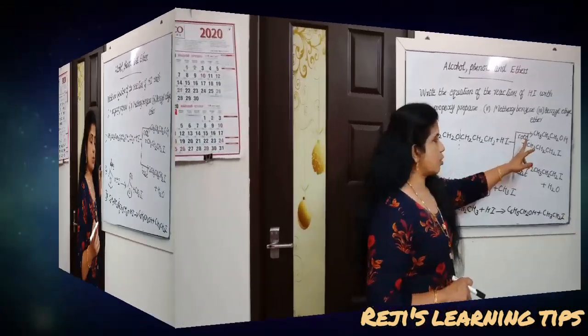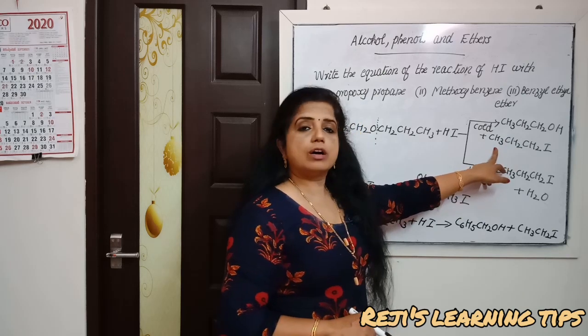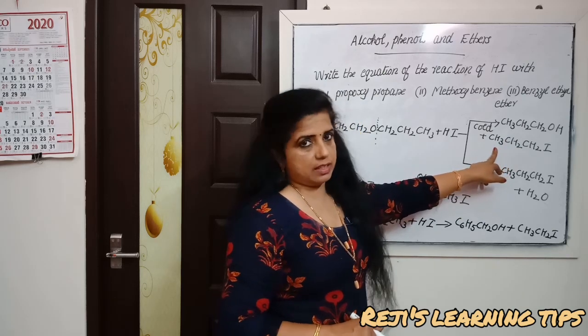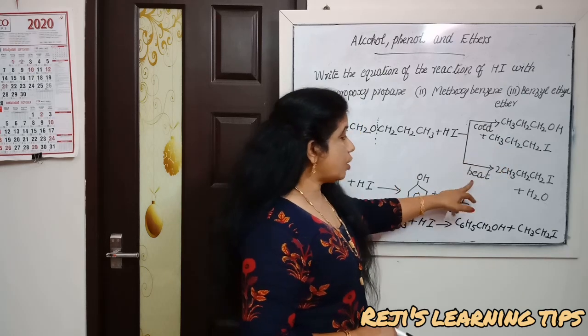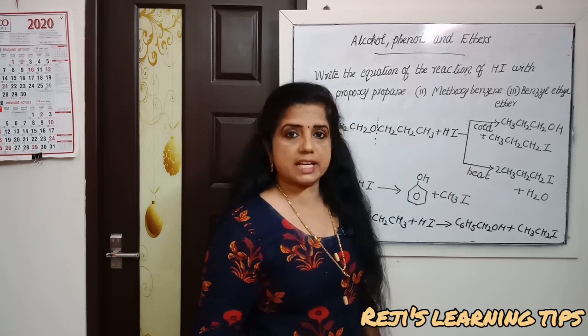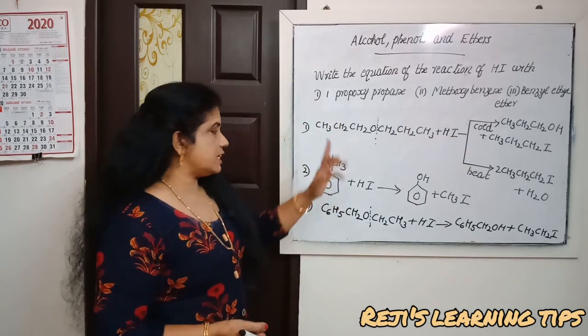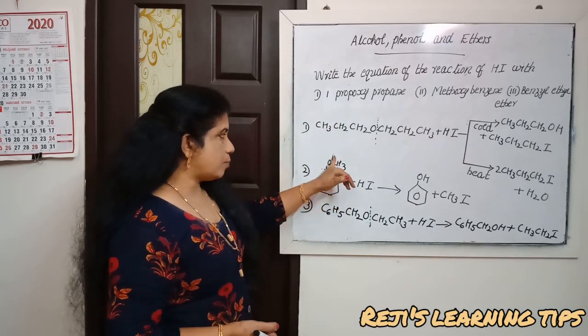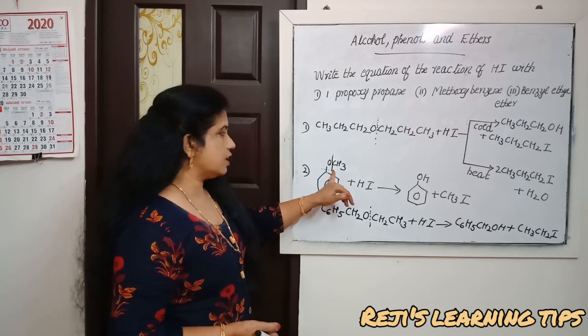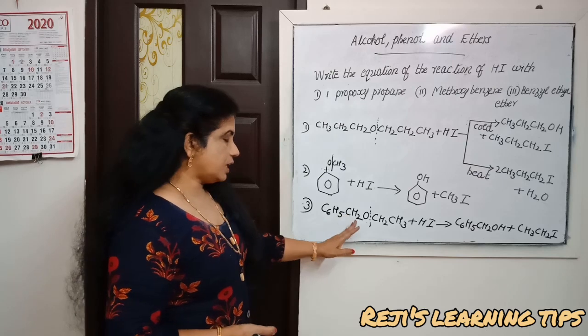In cold condition, we get propanol and iodopropane. In hot condition, we get two molecules of propyl iodide. For methoxybenzene, the bond breaks between CH3 and O to give phenol plus methyl iodide. In benzyl ethyl ether, the bond breaks to give C6H5-CH2-OH and CH3-CH2-I.